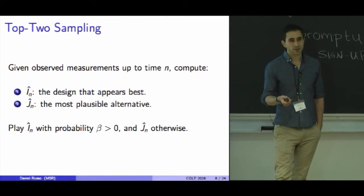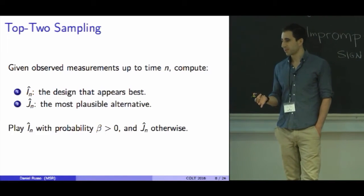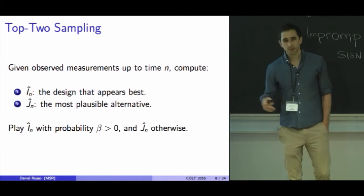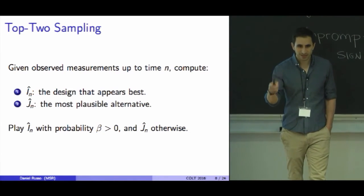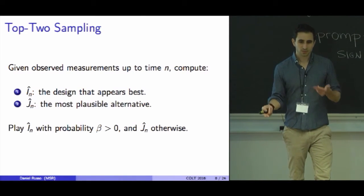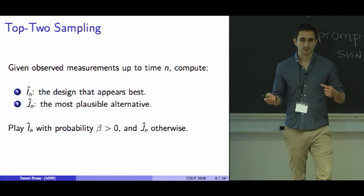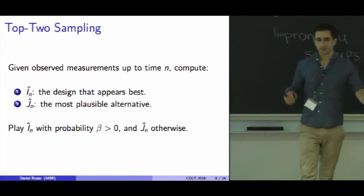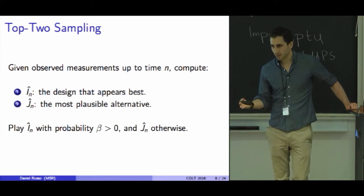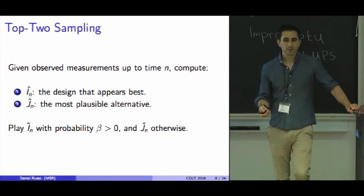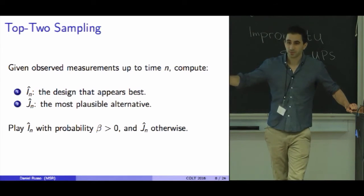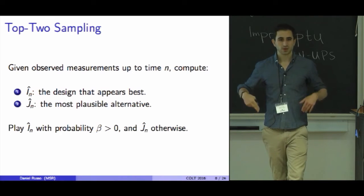Everything I'll propose is a variation on an idea I'll call top two sampling. At time n, given everything I've observed so far, I think in my head: what do I think is the best design? What do I think is likely to be the best, given the evidence I've seen? Then I think, if I'm wrong, what do I think screwed me up? What's the most likely alternative that could have been the best design? You compute these two things, and then you flip a weighted coin to decide which of the two you should play. As you continue, the top two designs change, and so you end up measuring everything. We want to think about ways of defining algorithms like this, under which the proportion of time you spend measuring the best designs—each of the possible designs—is going to be asymptotically optimal.